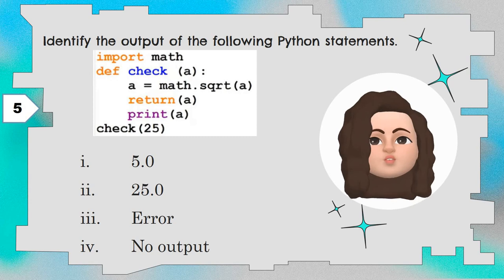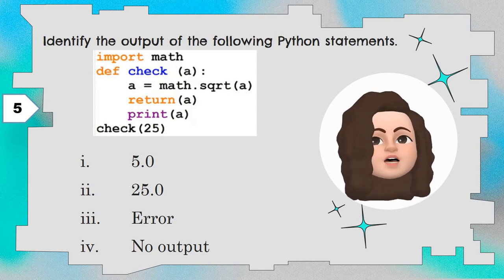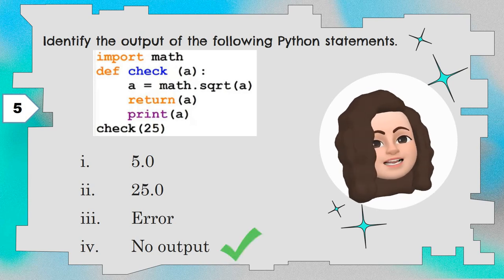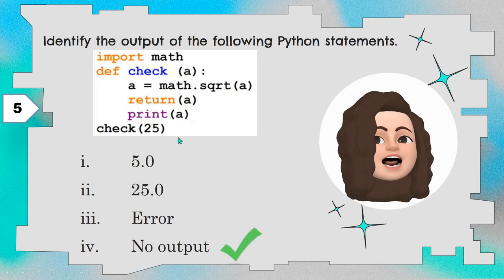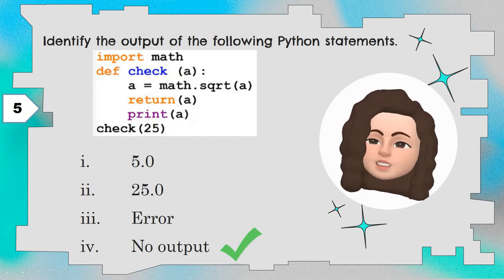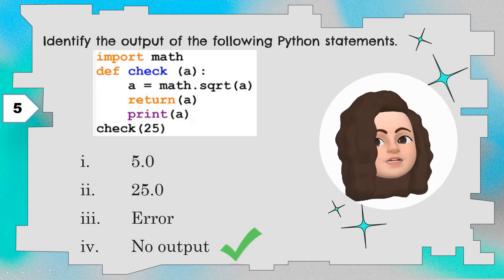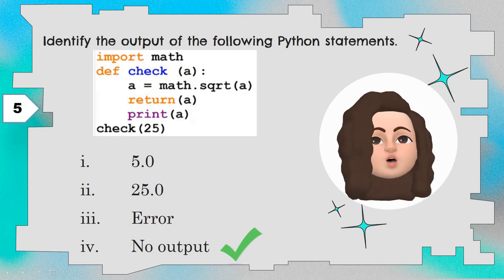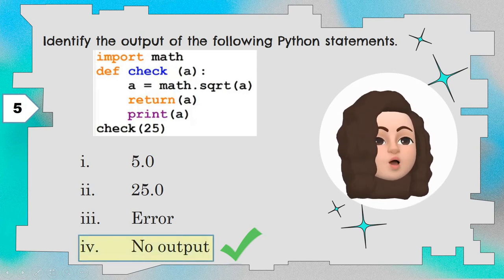Any statements given after the return statement will not get executed. Even though the function is returning, the function call is not assigned to a variable. If it were assigned to a variable and you asked to print it, you could see the output. Here we are just calling the function — it is returning, and the print statement after the return will never execute. Hence the answer is no output.